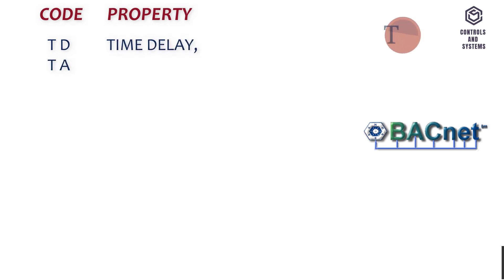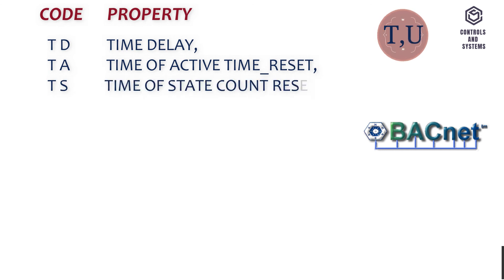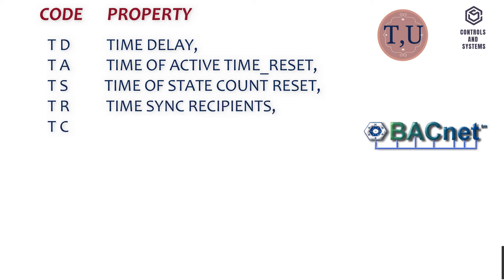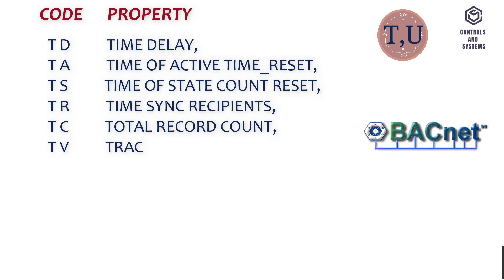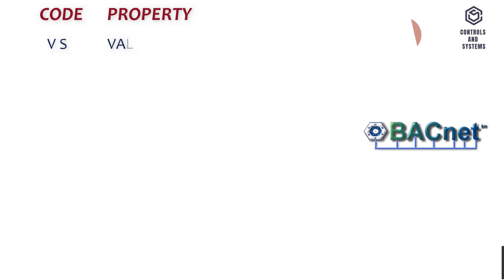C-A - Time Delay, C-S - Time Of Active Time Reset, C-R - Time Of State Count Reset, C-C - Time Sync Recipients, C-V - Total Record Count, C-U-N - Tracking Value, C-U-I - Units, C-U-O - Update Interval, C-V-S - UTC Offset, C-V-V - Valid Samples.